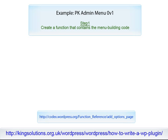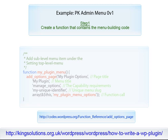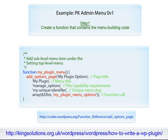What follows is a simple example of the three steps necessary for the creation of a plugin administration menu. Step 1 in the process is to create a function that contains the menu building code — MyPluginMenu in this example. This contains one function, AdoptionsPage, whose purpose is to add a submenu to the settings menu.